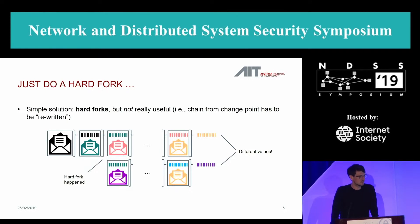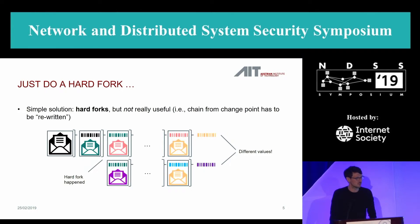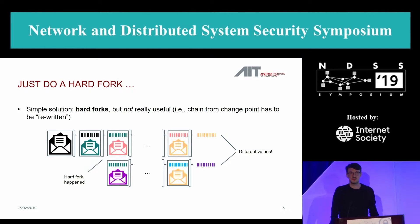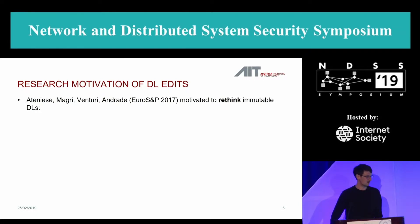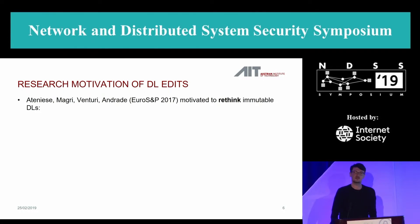Doing a hard fork requires you to rewrite the entire chain from the change point. If the hard fork happened five years ago, you must rewrite the entire blockchain from that point on. This motivated Artinese, Margri, Venturi, and Andrade in their paper from EuroS&P 2017 to rethink immutable distributed ledgers.